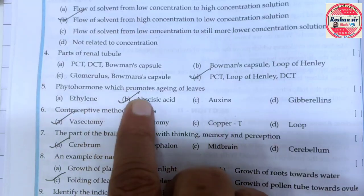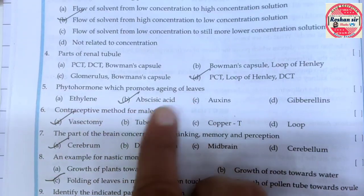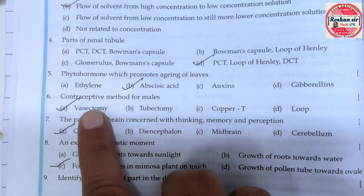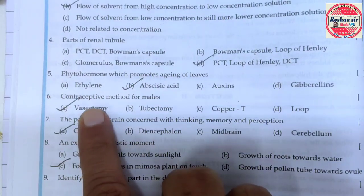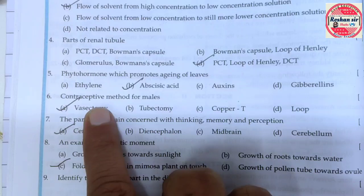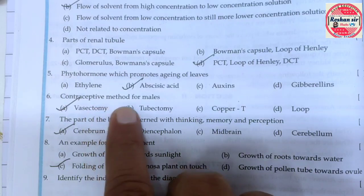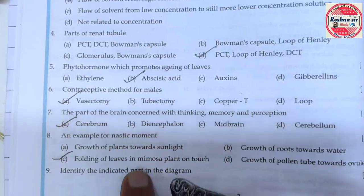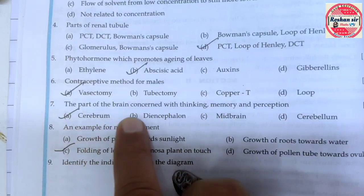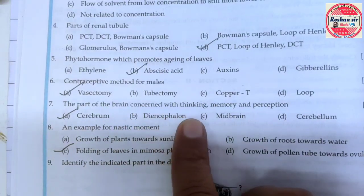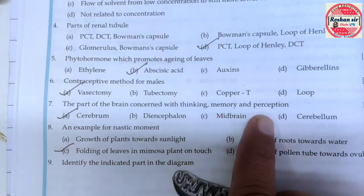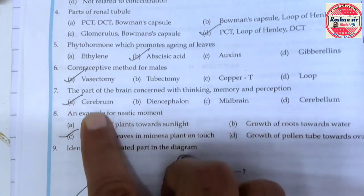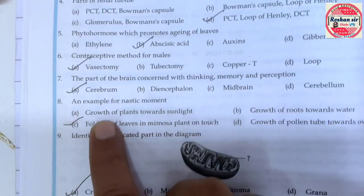Plant hormones which promote again the leaves — abscisic acid. Contraceptive method for men — vasectomy. The part of the brain concerned with thinking, memory and perspiration — cerebrum.